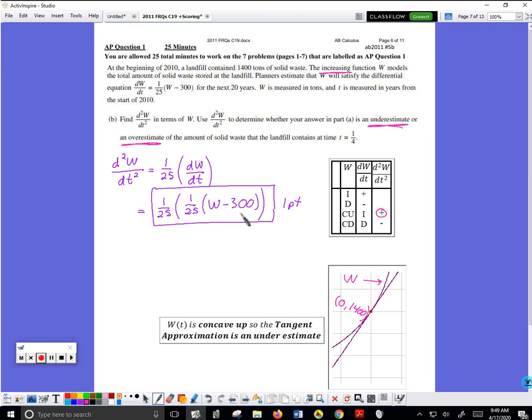I write d squared W over dt squared is positive. I guess I can just say is positive, greater than zero—same thing.